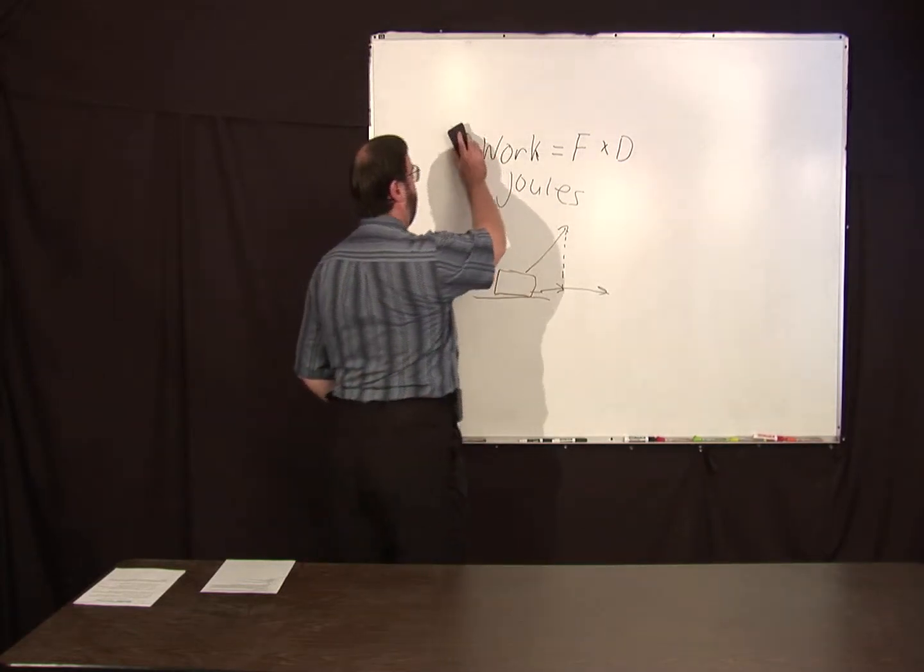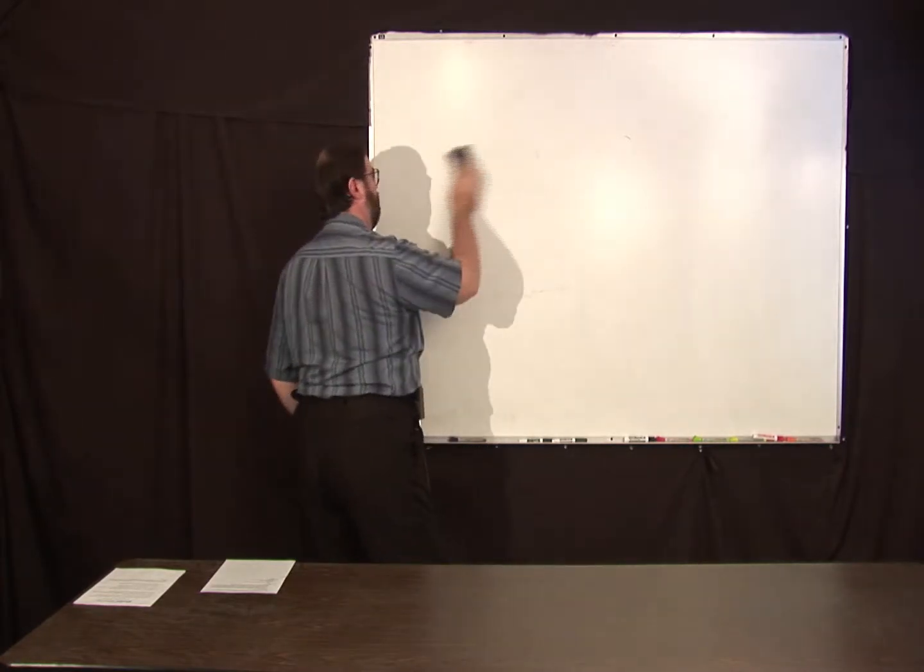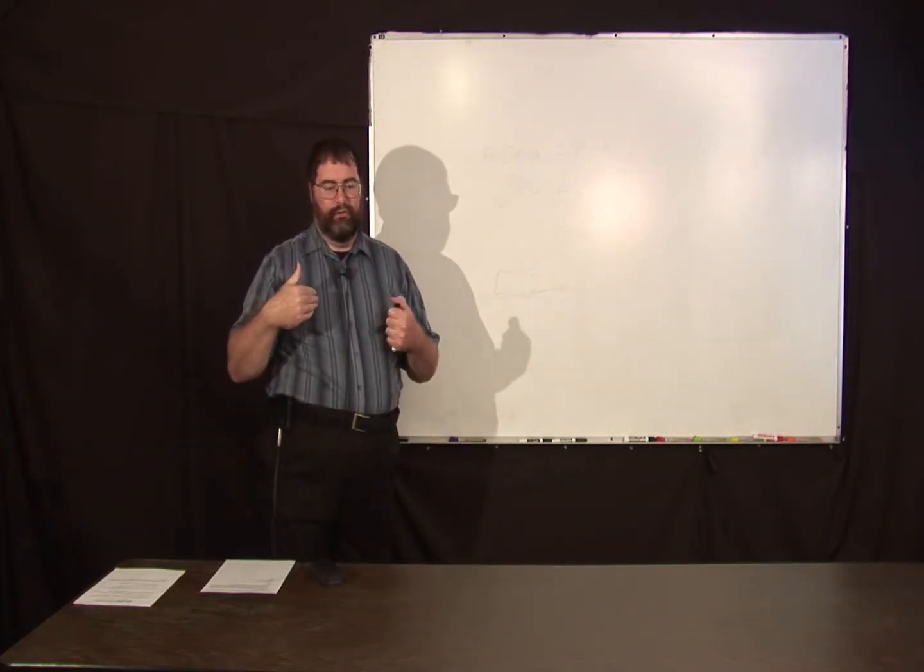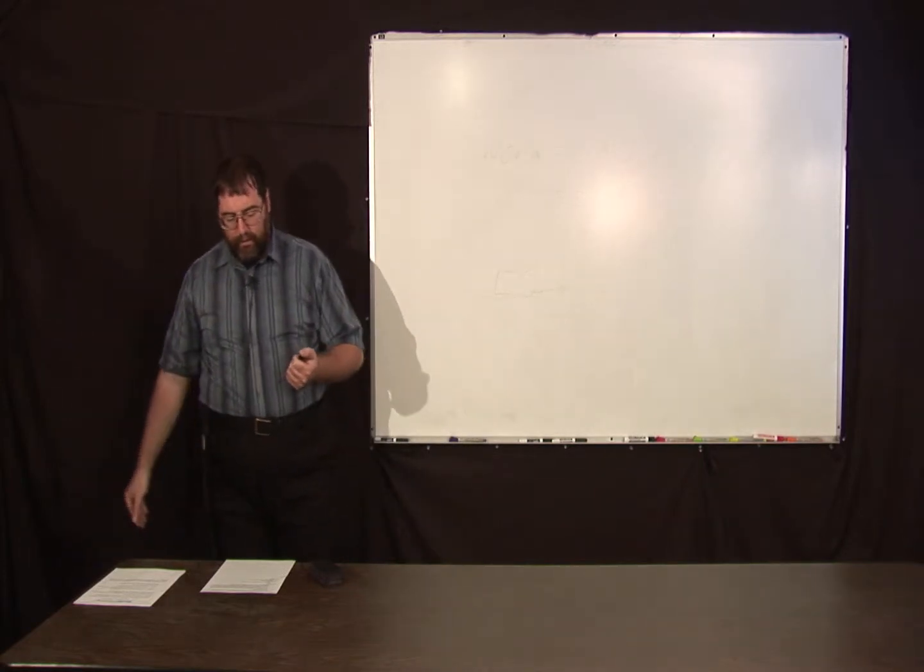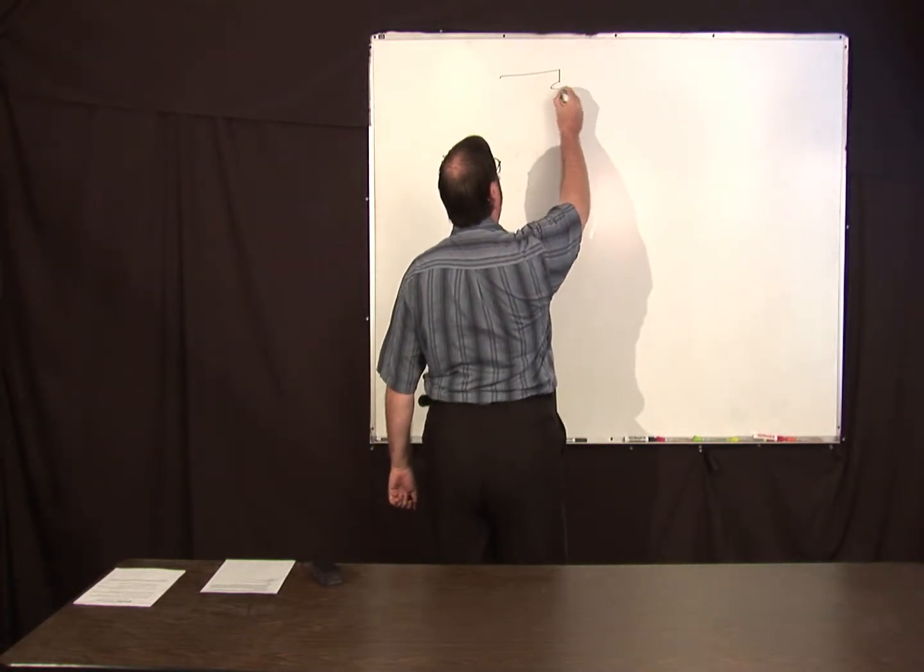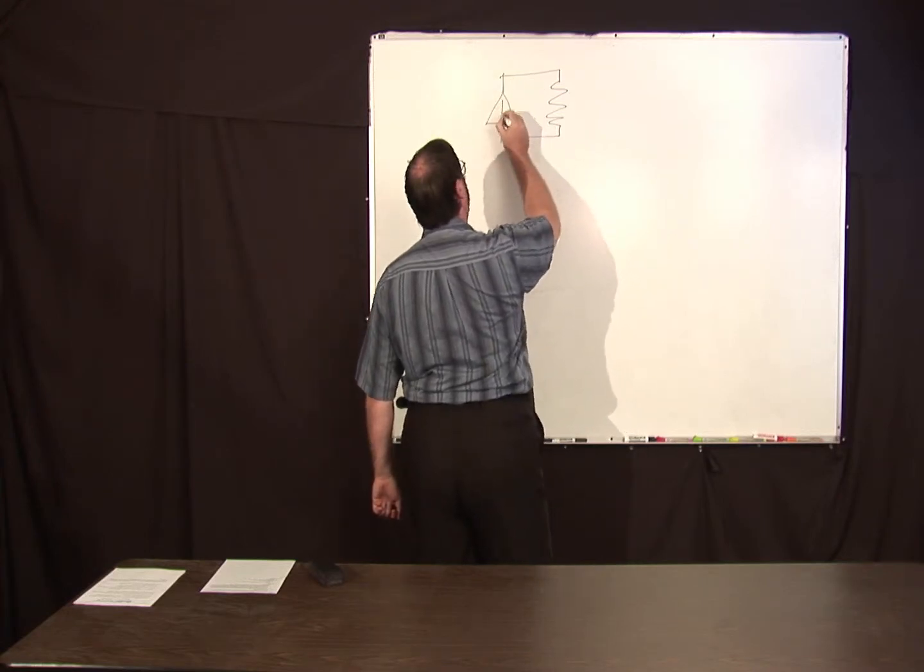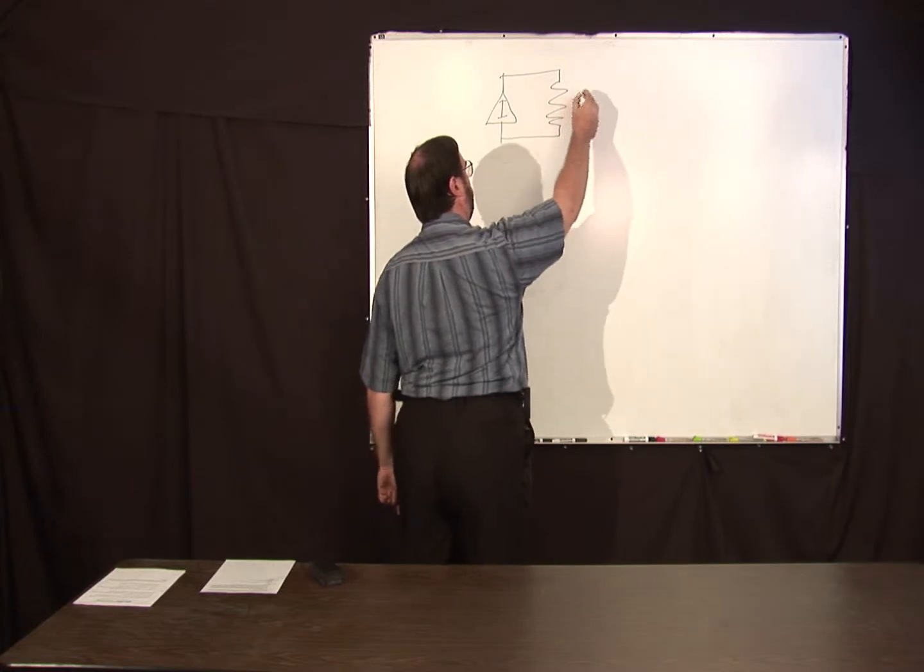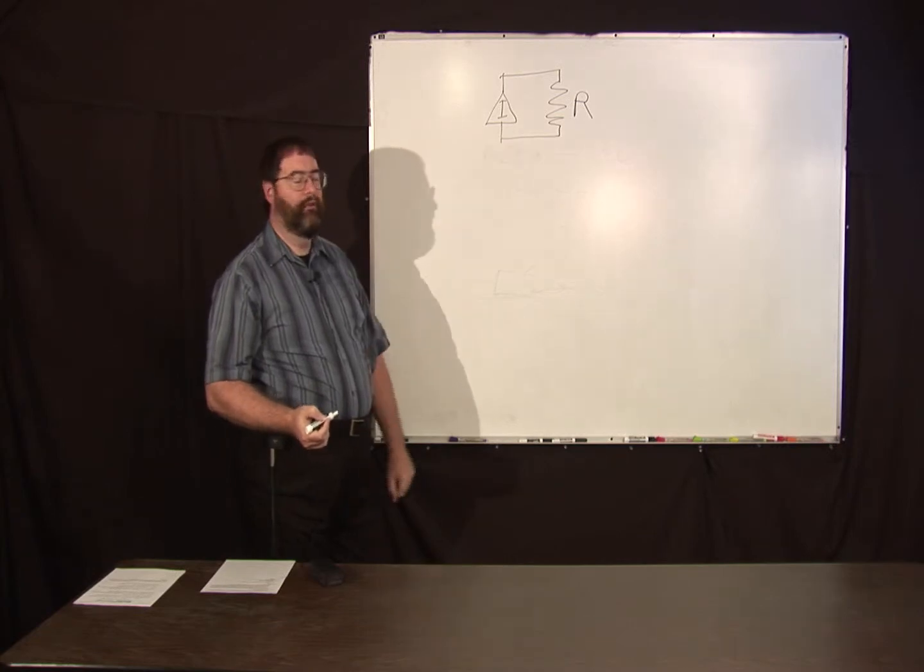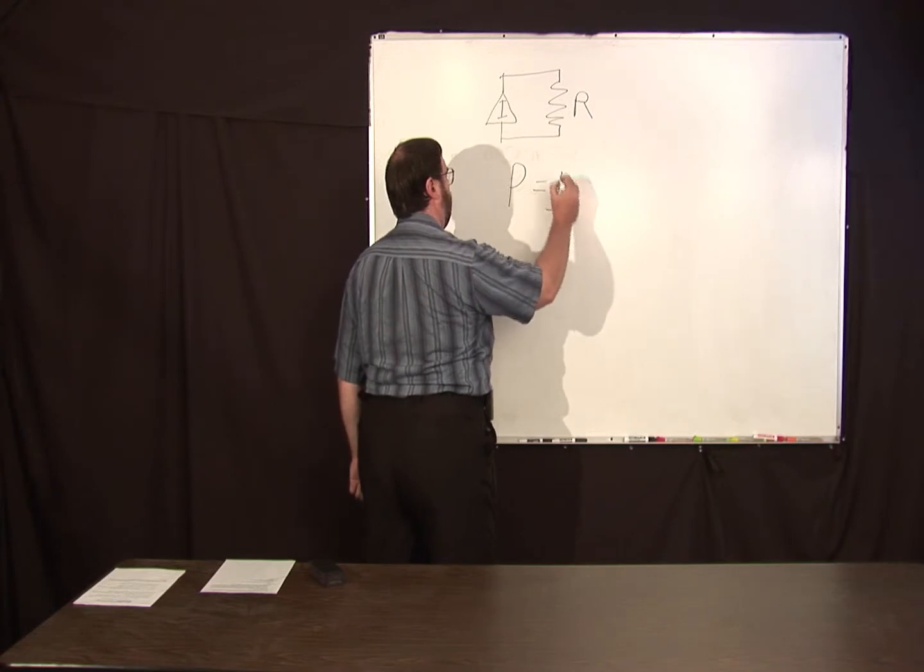So what is power then? Power is the time rate of doing work, or time rate of change of energy. It tells you the rate at which energy is being transferred to something. For instance, we already know for a resistor, let's say I have some current source I, and this is R. The power delivered to that resistor, P, equals I squared R.